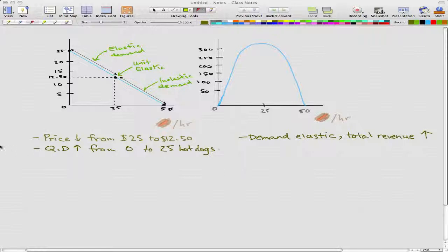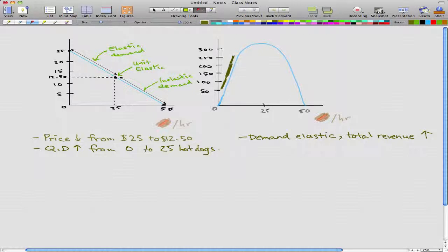So we're going to take a look at this bell-shaped graph right now. This is our total revenue graph. And the quantity increases from 0 to 25. The demand is elastic and the total revenue increases. And this is shown in the graph with an arrow tracing the curve going this way.